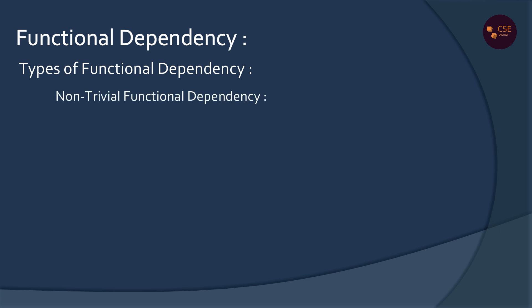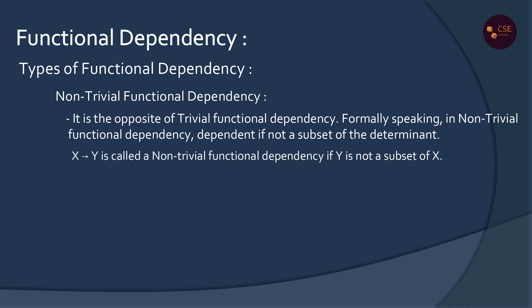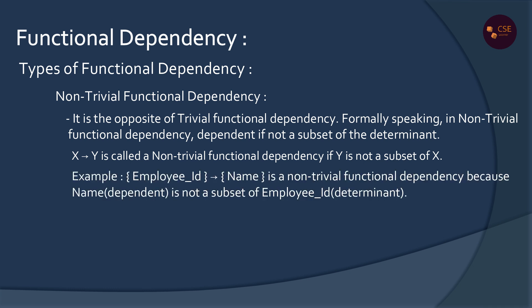Non-Trivial Functional Dependency: if the right side attributes are not present on the left side, that is Non-Trivial Functional Dependency. The dependent attributes are not part of the determinant attributes. For example, X determines Y where Y is not a subset of X — that is Non-Trivial Functional Dependency. Employee ID determines Name is a Non-Trivial Functional Dependency.